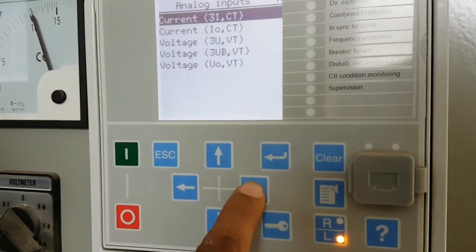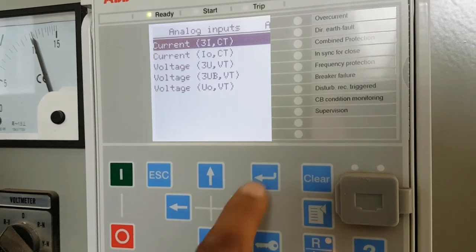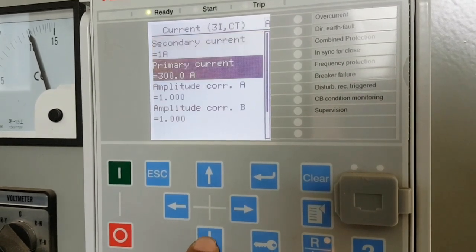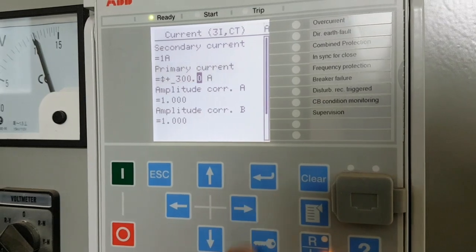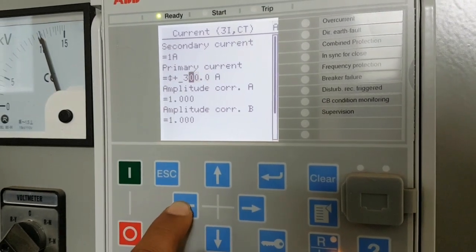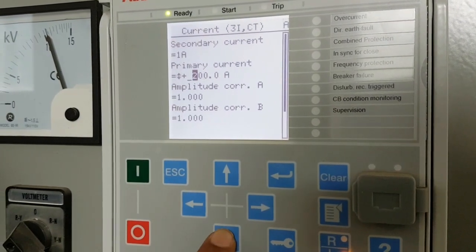Then click the right arrow button. You will see the current I3I CT, and go to primary current. There will be secondary current as well.